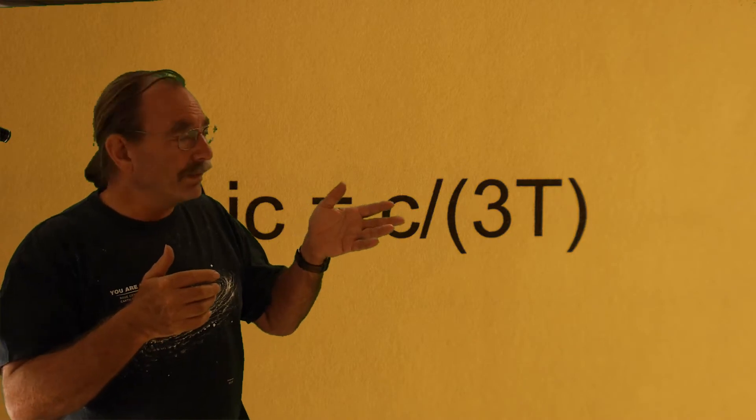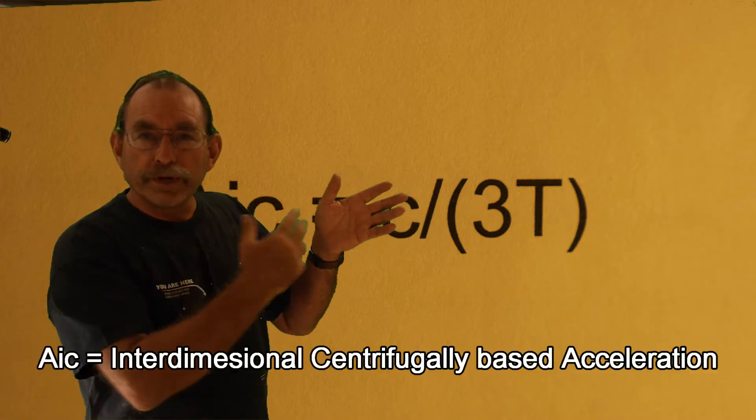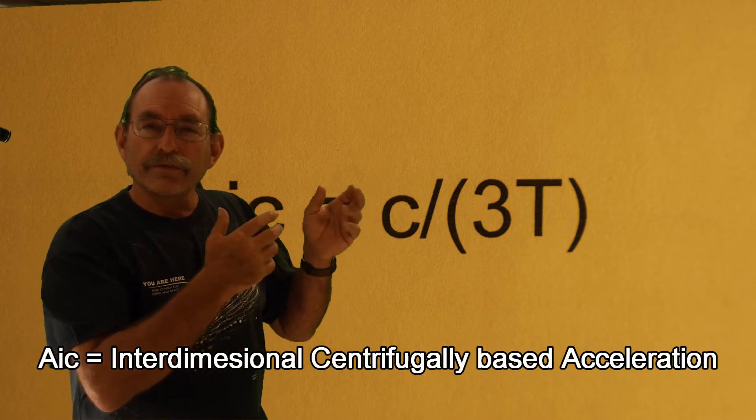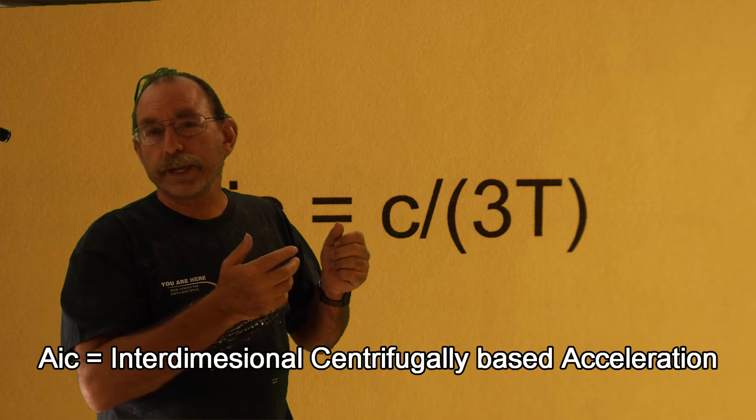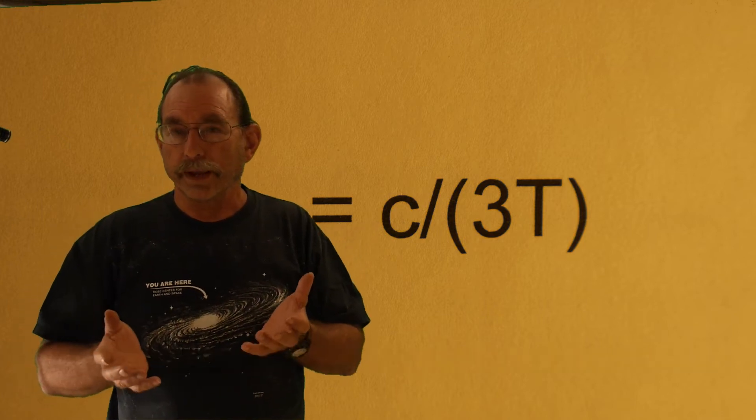When you consider this and you go through the model, the acceleration experienced should be conformant to this relationship here. This predicted intrinsic resistance to expansion is very close to the expansion requirement that you need to explain dark matter.